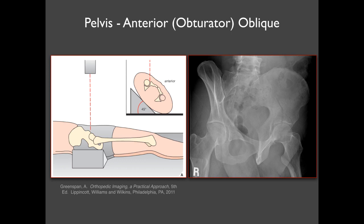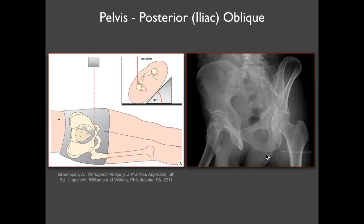Another specialized view done for the pelvis or hips is the obturator oblique view, called the Judet view. That's a 45-degree oblique view — you can do it on the full pelvis or just one side — showing the different columns of the acetabulum. There's a right side down and a left side down view. On the right side you can see the posterior column of the acetabulum, and on the contralateral side you see the anterior column.